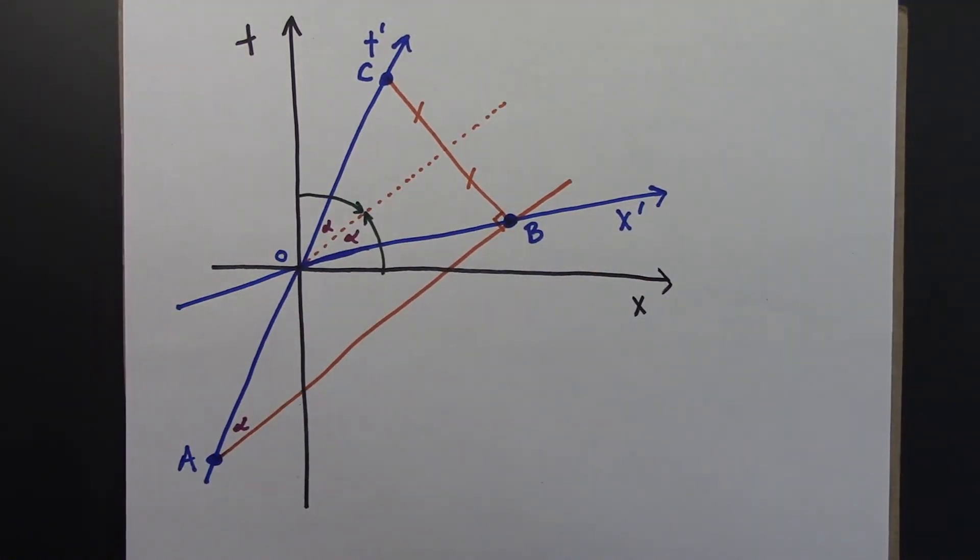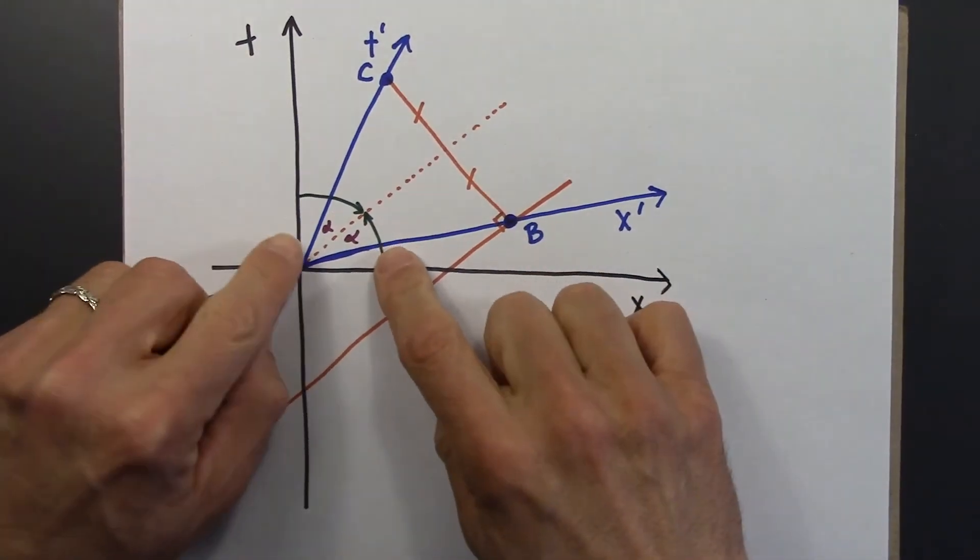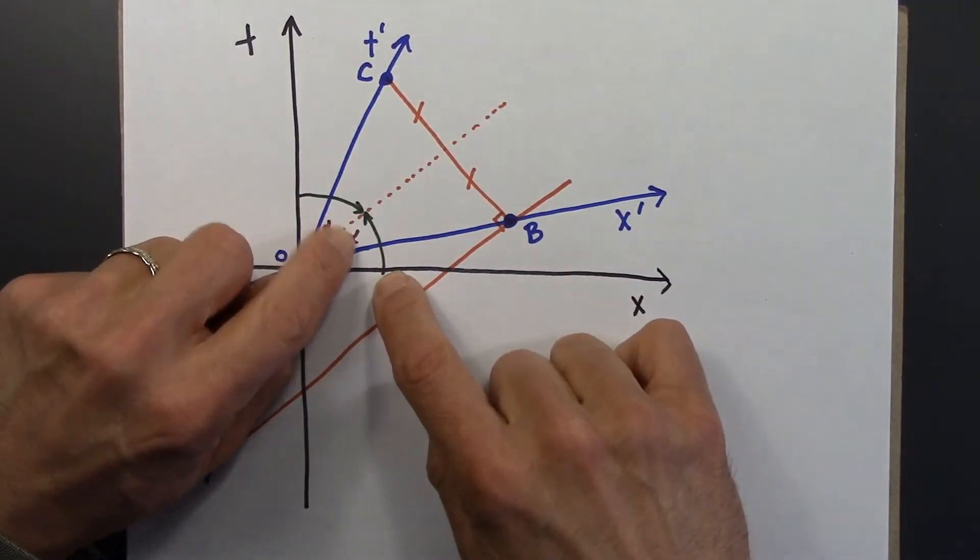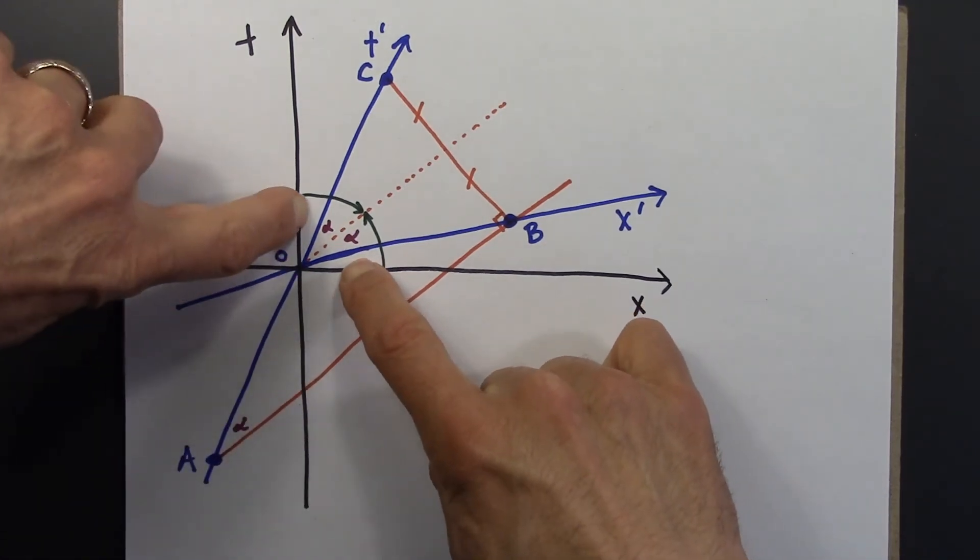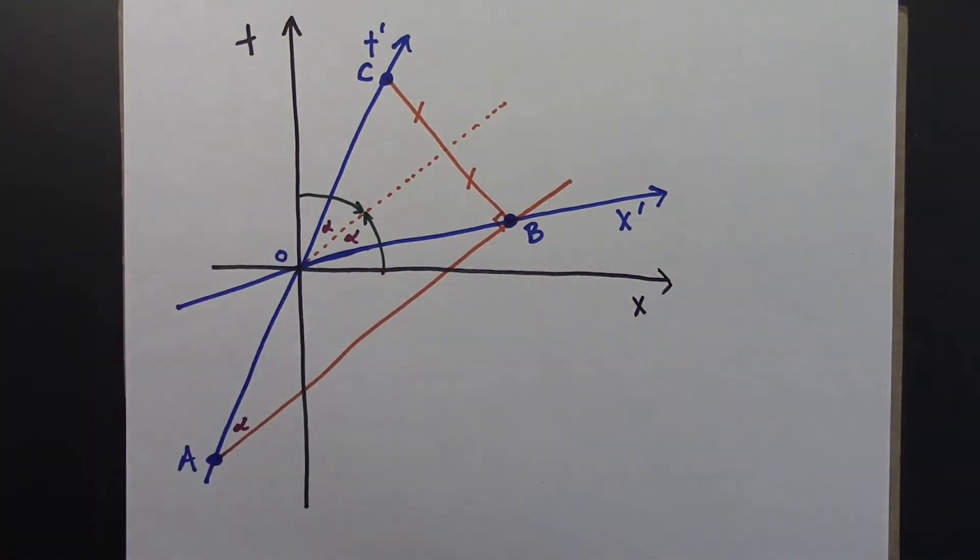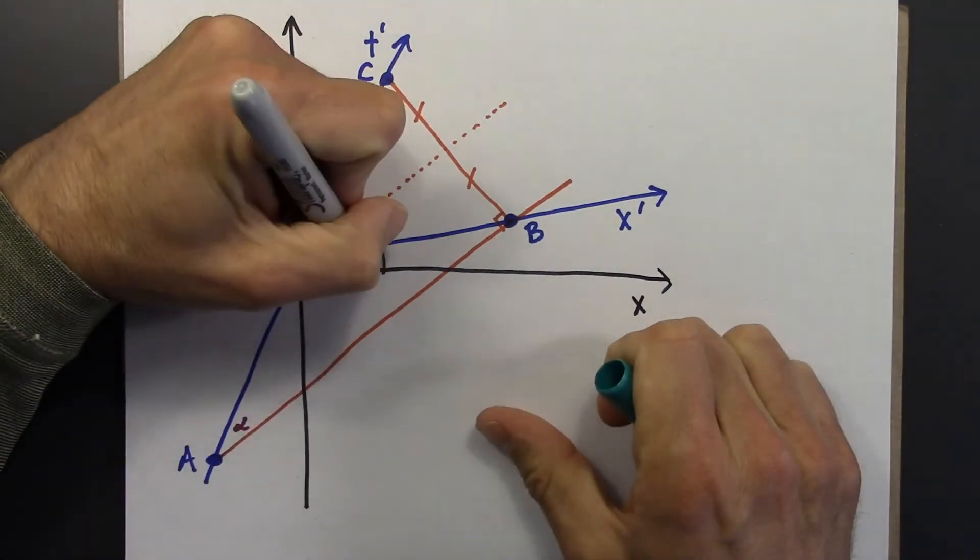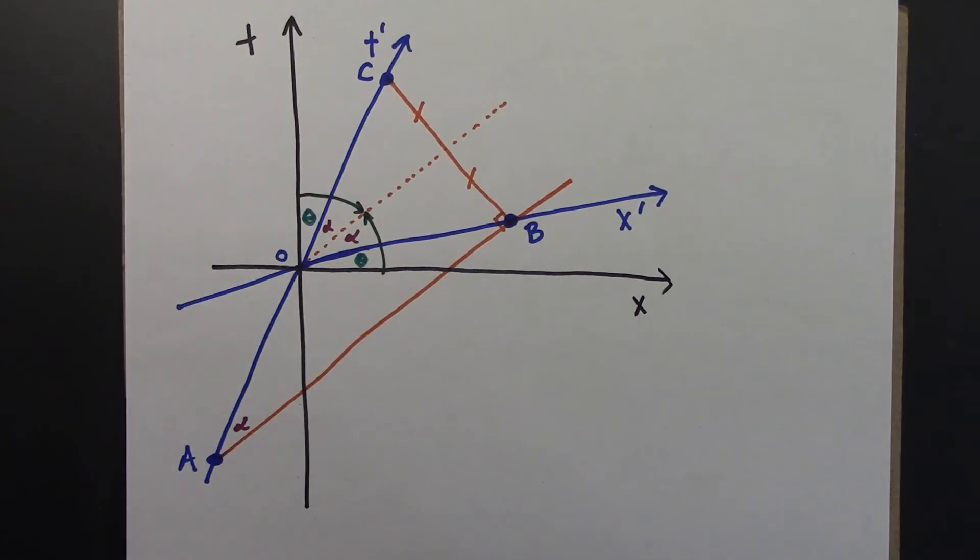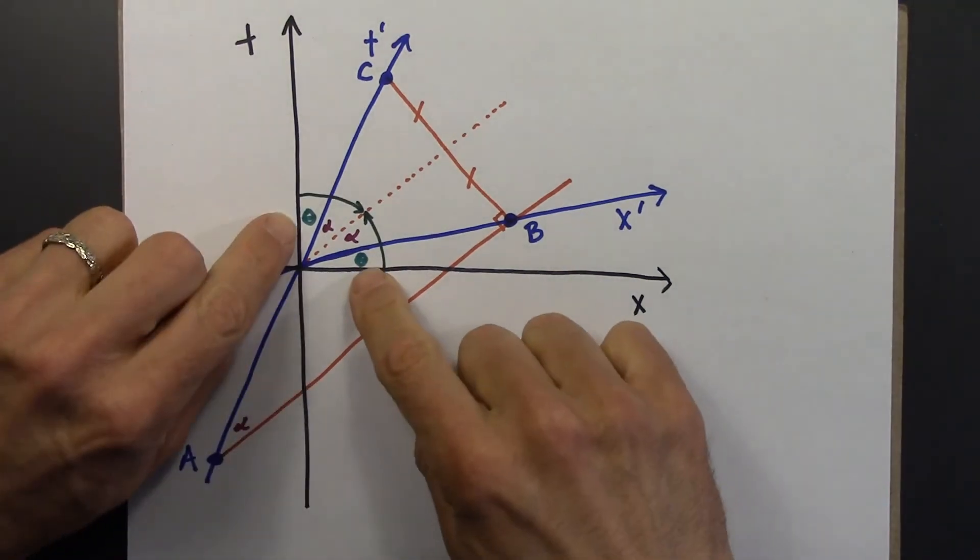And so that tells me that 45 minus alpha is blah. 45 minus alpha is blah. That these two angles have to be the same. And I guess, that's a theta that didn't come out very well. But hopefully you get the idea.